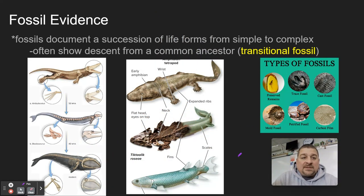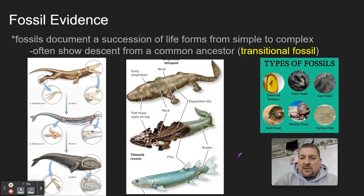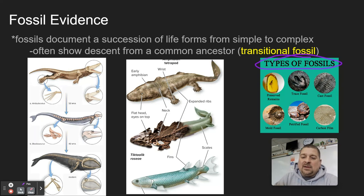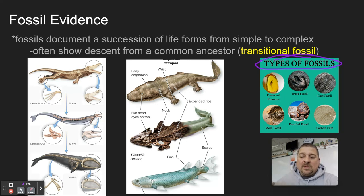First up is fossil evidence. Fossils are evidence of creatures that have lived in the past. There are usually six types of fossils: preserved remains, trace fossils like a footprint, cast fossils that are laid in the ground, mold fossils, petrified fossils where they fill with minerals and become rock, and carbon film fossils. From these fossils, we can glean a lot of information.